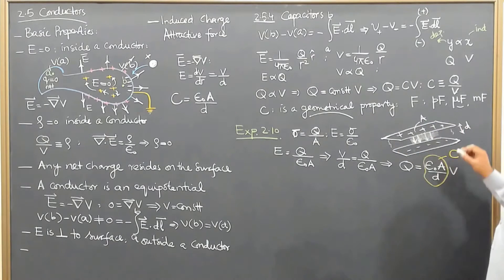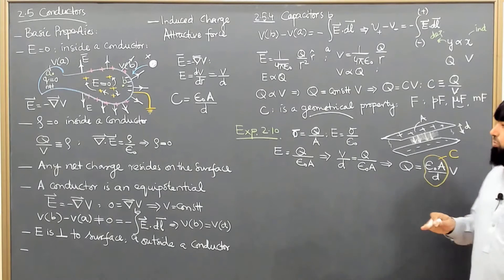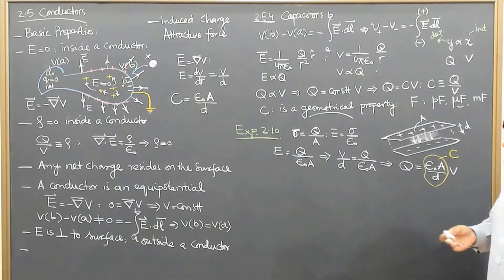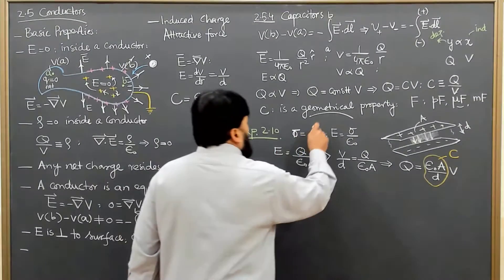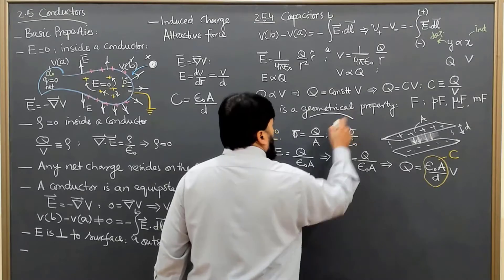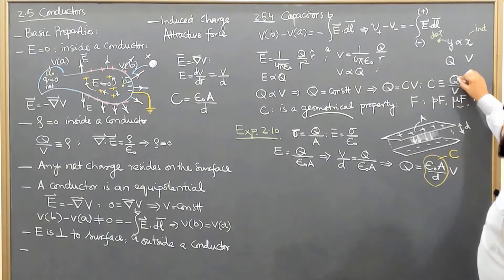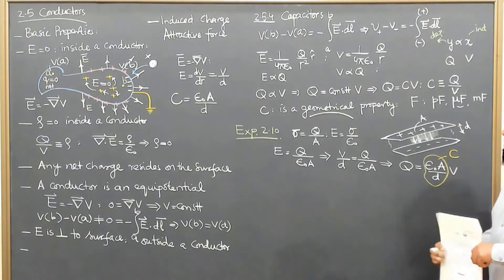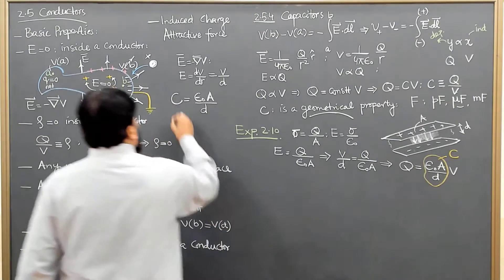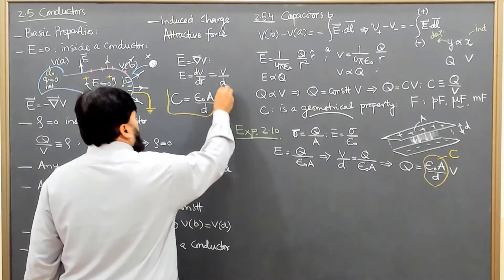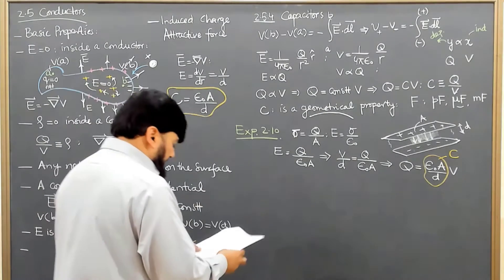D is the separation between the plates. When we decrease d, we will have more capacitance. Increasing d will reduce the capacitance. That's why we said that capacitance is purely a geometrical property — it has nothing to do with Q and V.